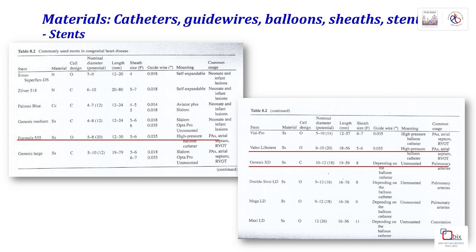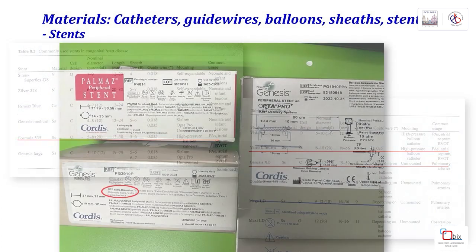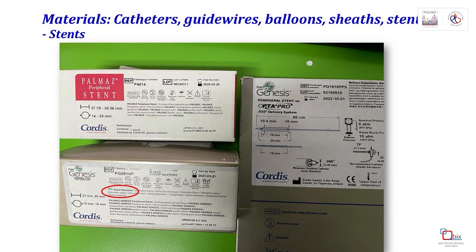I am only familiar with the Genesis XD, and previously I had used Formula until it became unavailable. For the Palmaz Genesis, we must ensure it is the Genesis XD — which denotes extra diameter, dilatable to 18 mm — and they do not come pre-mounted. I am not sure if the Genesis pre-mounted on OptaPro is dilatable to that kind of diameter.